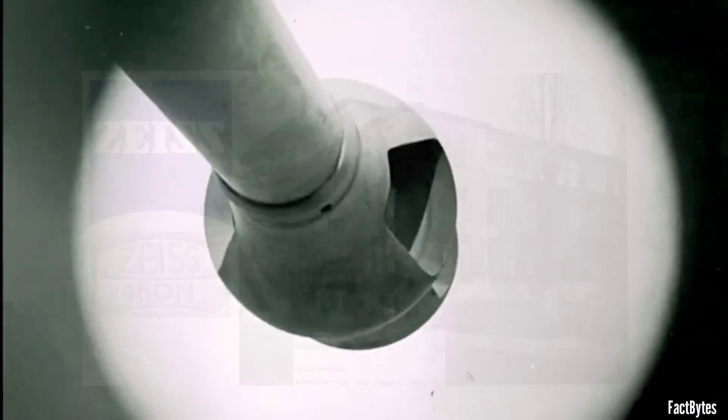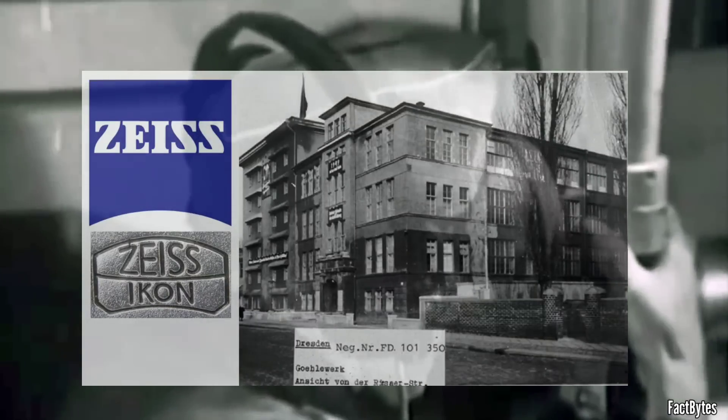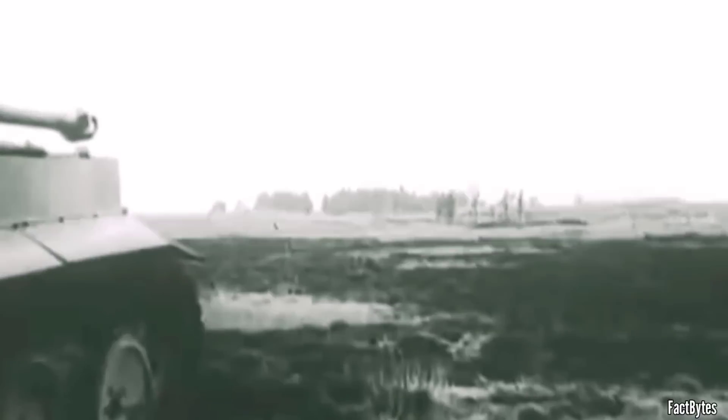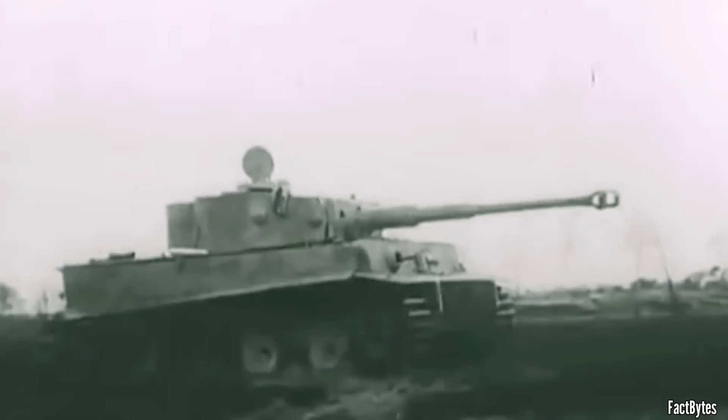Designed by the renowned German optics manufacturer Zeiss, these devices became synonymous with precision and excellence on the battlefield. Typically, the TZF was positioned to the left of the main gun. Offering German tank gunners a distinct advantage, especially in long-range combat scenarios with clear, unobstructed views, Zeiss-designed gun sights revolutionized the way engagements were conducted.